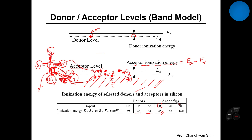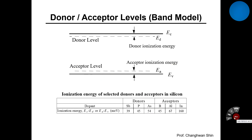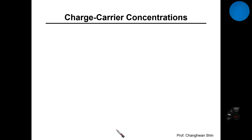That's the concept of how donor and acceptor energy levels are created within a band diagram. Let's stop here and I'm going to record the next movie clip soon.